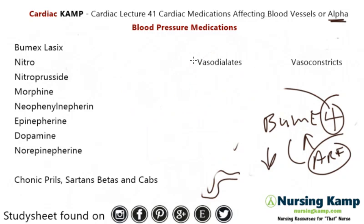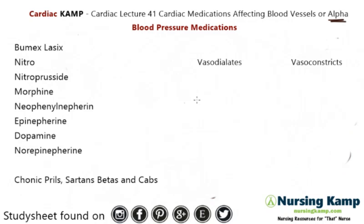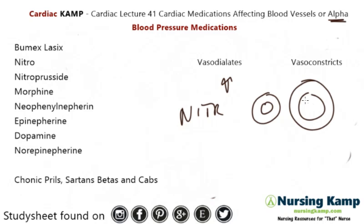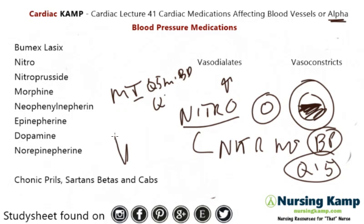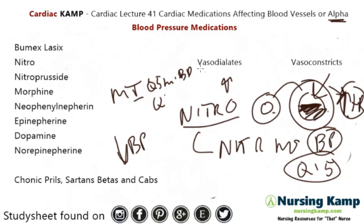The next thing is nitro — nitroglycerin. Nitro sublingual, given under the tongue in MIs, actually vasodilates. That's why we're very concerned about it: a patient who gets nitro or gets on a nitro drip — you are going to monitor blood pressure Q15 minutes. If you're giving it in an MI, give it, wait five minutes, then take a blood pressure, then give it again. You expect blood pressure to go down. In a normal person, blood pressure will go down and heart rate will go up — a normal finding — because the body responds to low volume from the vasodilation. Nitro works on preload.